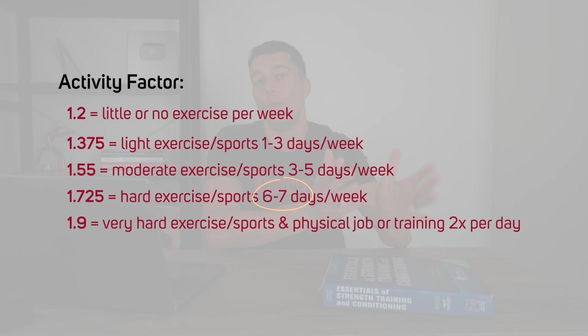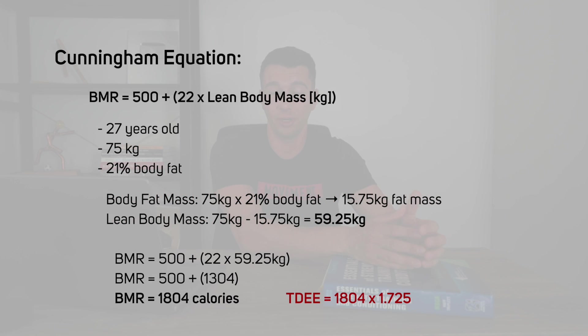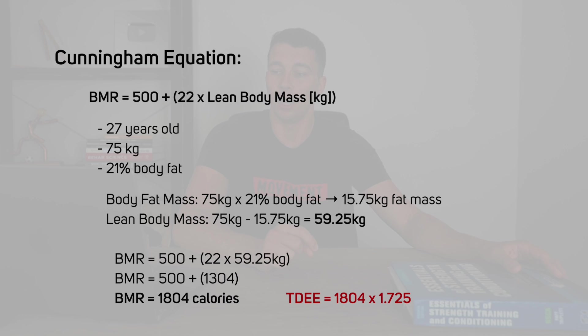At this point, you need some indication of activity level to convert BMR into total daily energy expenditure. If the athlete is training hard six times per week and walking 10,000 to 11,000 steps per day, the activity factor is 1.725. Multiply that by our BMR of 1,804 and we get a total daily energy expenditure of 3,112 calories per day — the athlete's estimated maintenance calories.